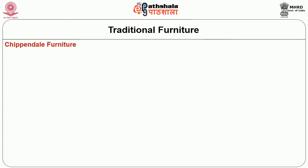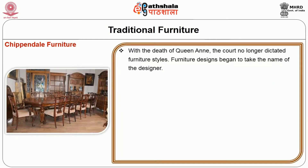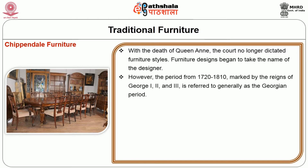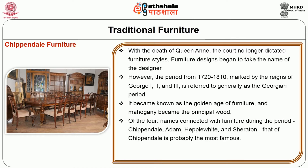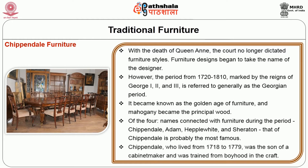Chippendale furniture: with the death of Queen Anne, the court no longer dictated furniture styles; designs began to take the name of the designer. The period from 1720 to 1810, marked by the reigns of George I, II, and III, is referred to generally as the Georgian period. It became known as the golden age of furniture and mahogany became the principal wood. Of the four names connected with furniture during the period — Chippendale, Adam, Hepplewhite, and Sheraton — that of Chippendale is probably the most famous. Chippendale, who lived from 1718 to 1779, was the son of a cabinet maker and was trained from boyhood in the craft.